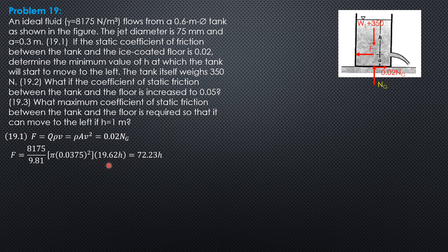Then V squared is 2GH. So 19.62H is 72.23H if you evaluate that.